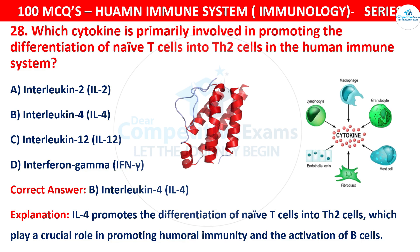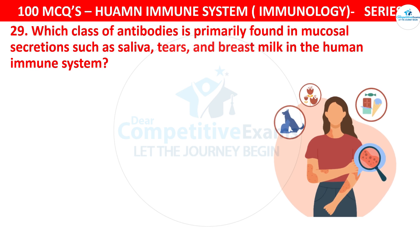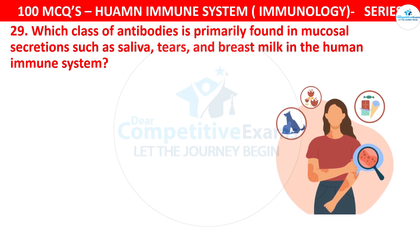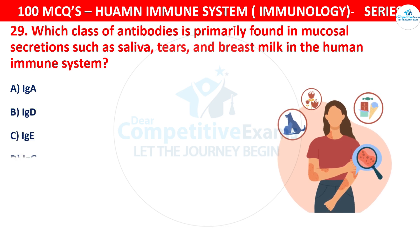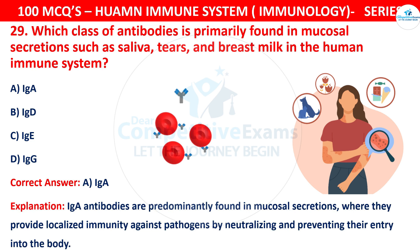Question 29: Which class of antibodies is primarily found in mucosal secretions such as saliva, tears, and breast milk in the human immune system? Options are IgA, IgD, IgE, or IgG. The correct answer is A, that is IgA. IgA antibodies are predominantly found in mucosal secretions, where they provide localized immunity against pathogens by neutralizing and preventing their entry into the body.